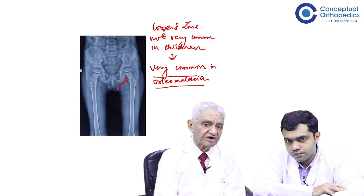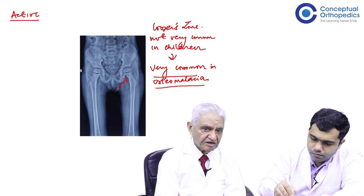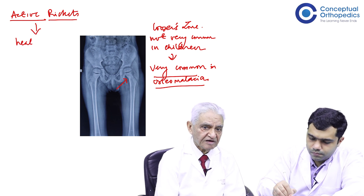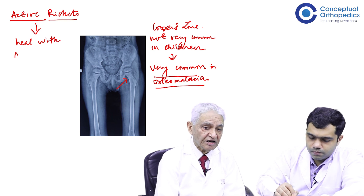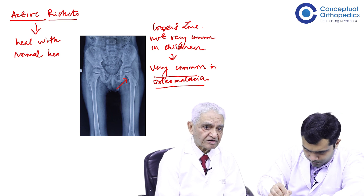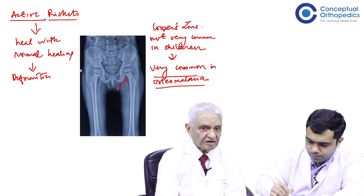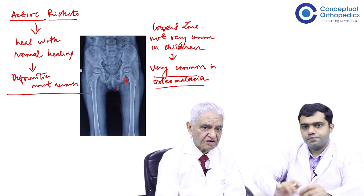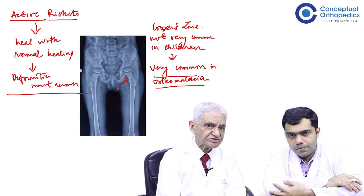Almost all childhood active rickets heal by giving suitable supplements like vitamin D, calcium, and a nutritious diet with sunlight exposure as possible. Within about six months, almost all these things will heal and most of the deformities also recover. However, these patients must be kept under observation regarding the deformity. The family has to be explained that the nutrition of the child must be as good as possible — basically vitamin D, calcium, protein, and sunray exposure.